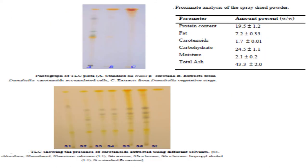After pigment extraction, the pigment is subjected to TLC. This is the standard beta-carotene, this is the pigment extracted from the carotogenic or stress-induced culture where more beta-carotene is produced, and this sample is from vegetative cells still in green color not exposed to direct sunlight — so the beta-carotene content is much less compared to the stress-induced condition. Chlorophyll a and b bands are also visible. Different solvents were tested to standardize the optimum conditions for beta-carotene separation on the TLC plate.